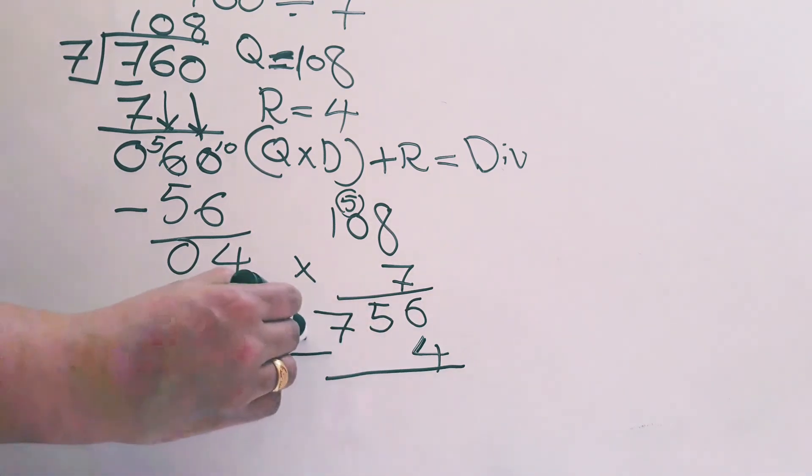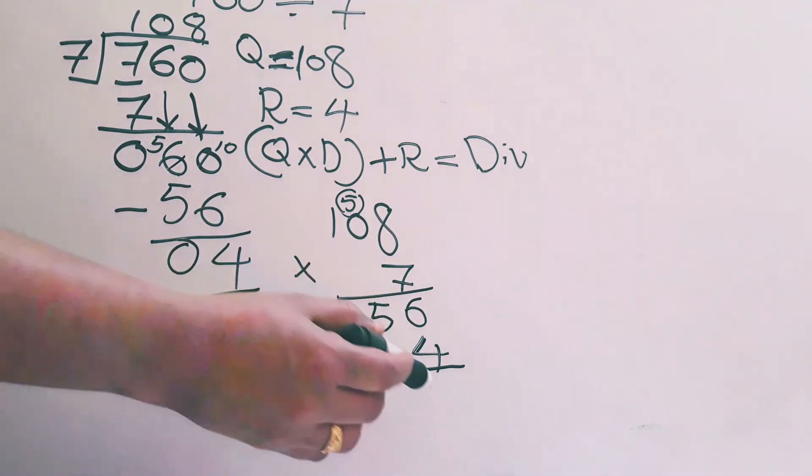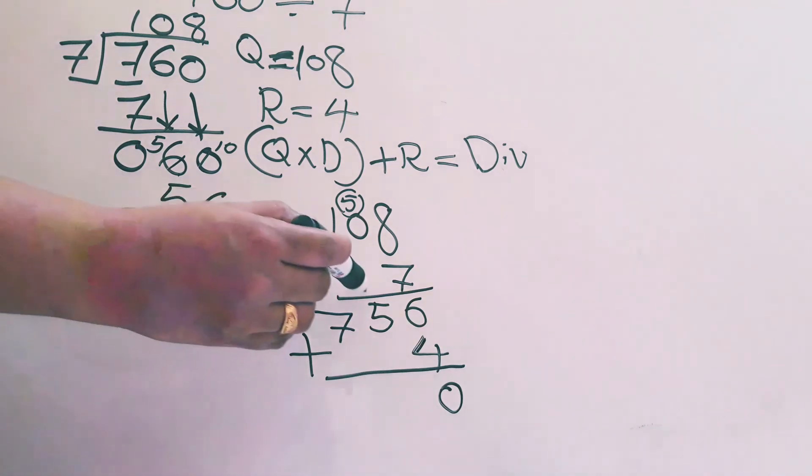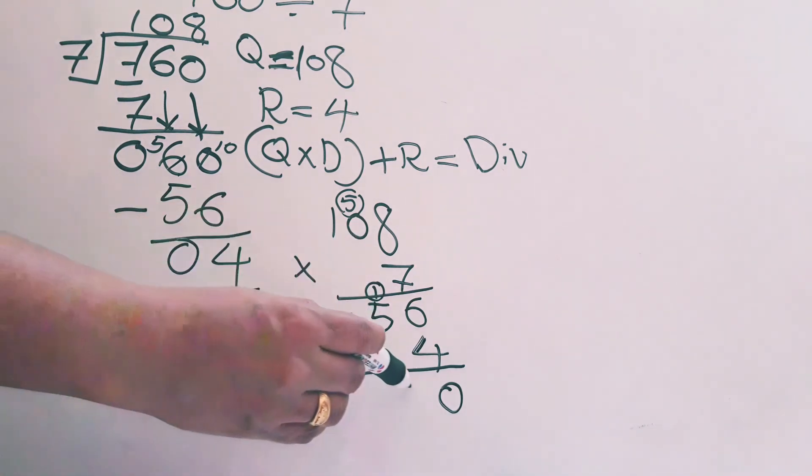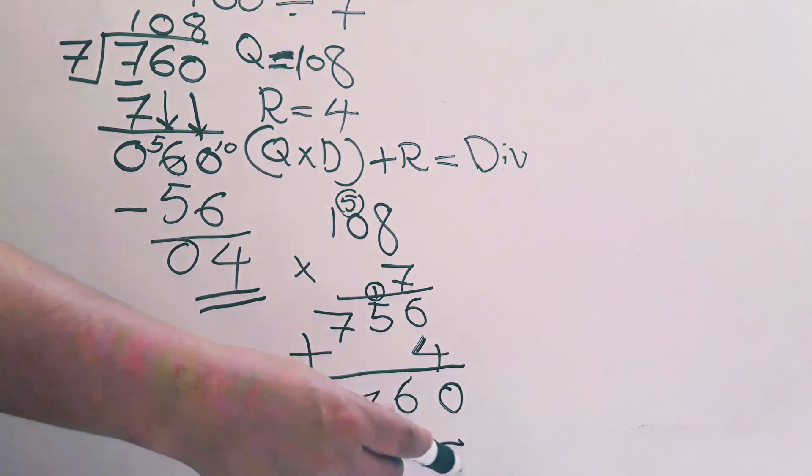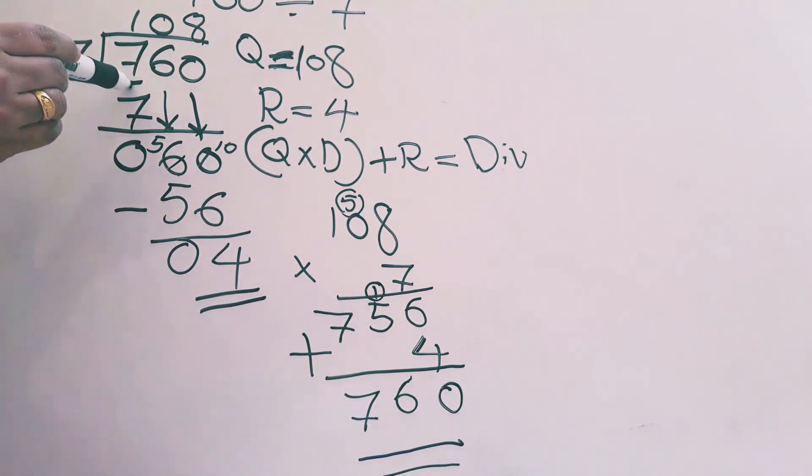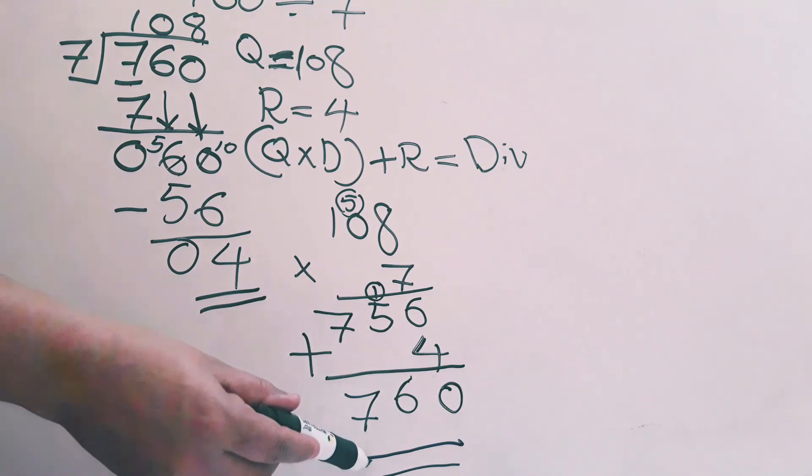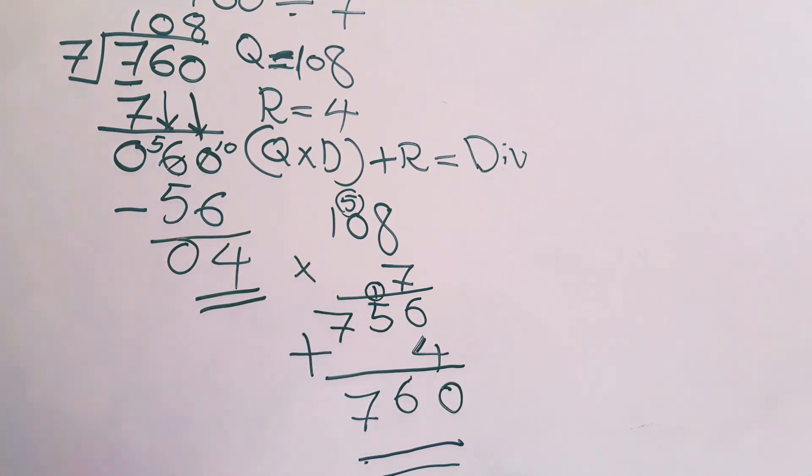756 plus 4. Do plus sign. 6 plus 4 is 10, carry 1. 5 plus 1 is 6. 7. 760. Our dividend is also 760. After checking also we got 760. That means our division is correct.